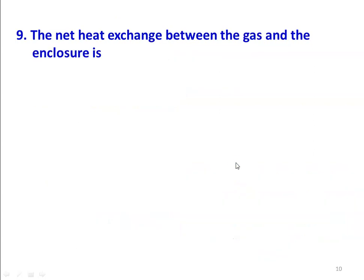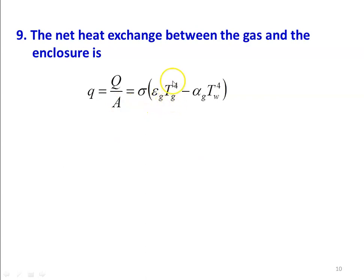The net heat transfer between the gas and the enclosure is given by: Q/A = σ × (ε_G × TG⁴ − α_G × TW⁴), where σ is the Stefan-Boltzmann constant. This is the heat exchange between the gas and the enclosure by means of radiation.